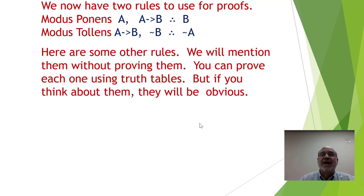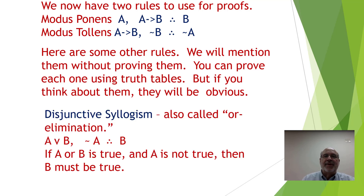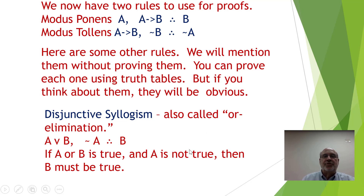If you think about them they will be obvious. There is the disjunctive syllogism, also sometimes called or-elimination: A or B, not A, therefore B. If either A or B is true and A is not true, then it is clear that B must be true.